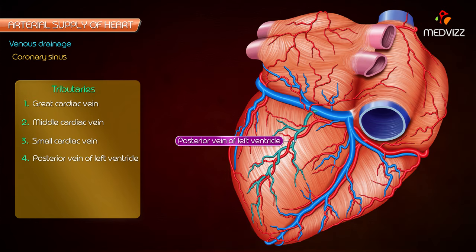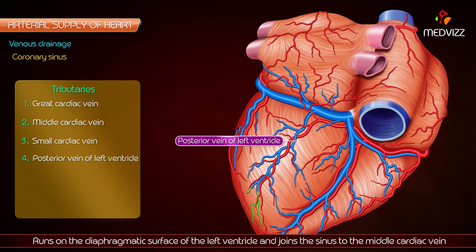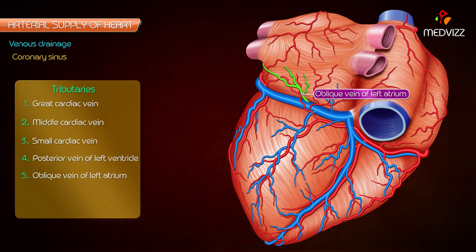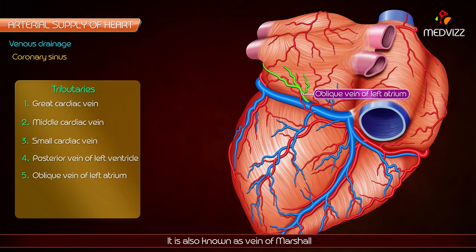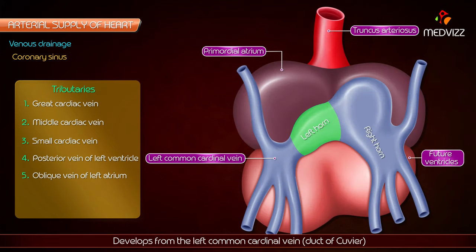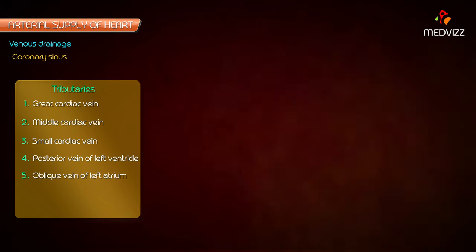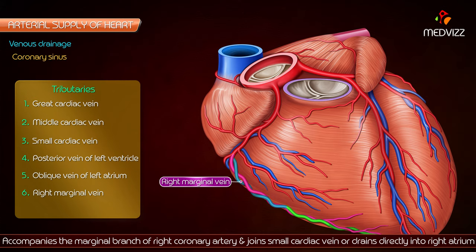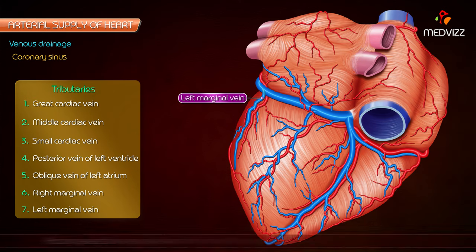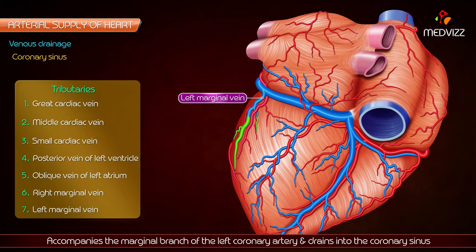The posterior vein of the left ventricle runs on the diaphragmatic surface of the left ventricle and joins the sinus to the left of the middle cardiac vein. The oblique vein of the left atrium — also known as the vein of Marshall — is a small vein running downwards on the posterior surface of the left atrium to enter the left end of the coronary sinus; it develops from the left common cardinal vein (duct of Cuvier). The right marginal vein accompanies the marginal branch of the right coronary artery and joins the small cardiac vein or drains directly into the right atrium. The left marginal vein accompanies the marginal branch of the left coronary artery and drains into the coronary sinus.